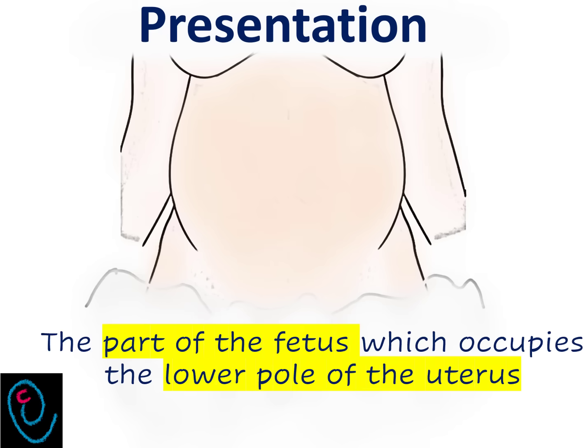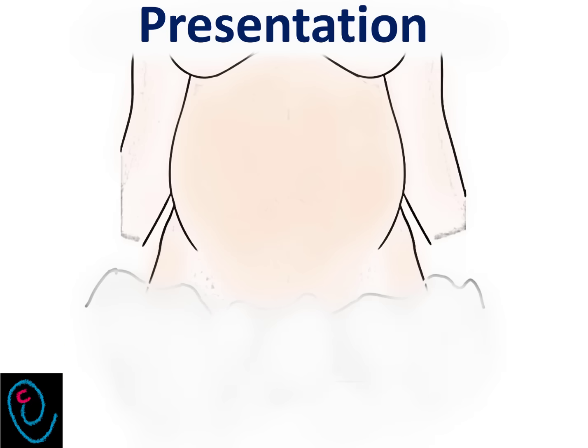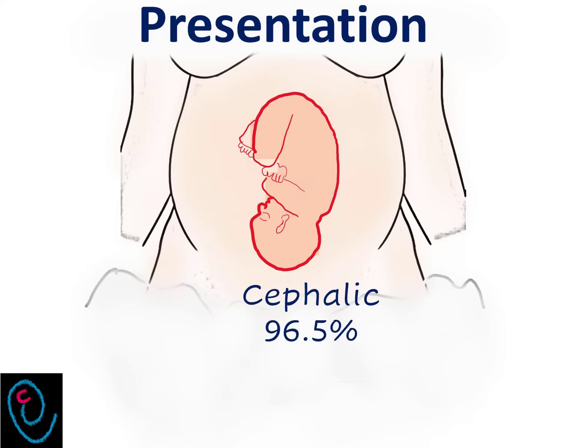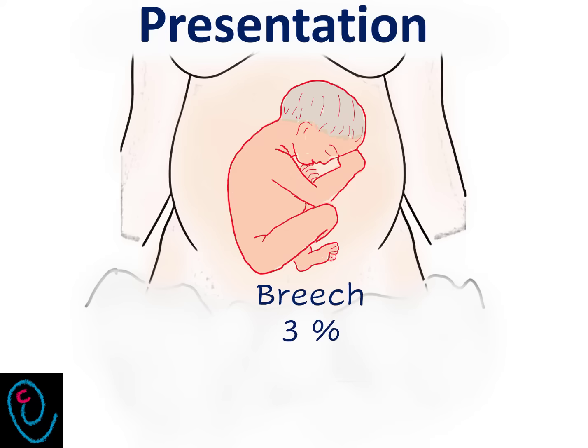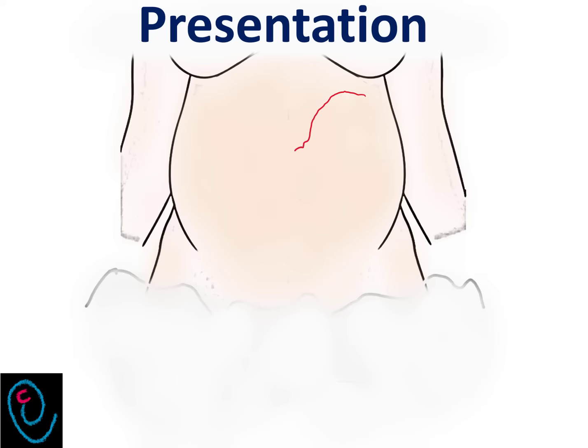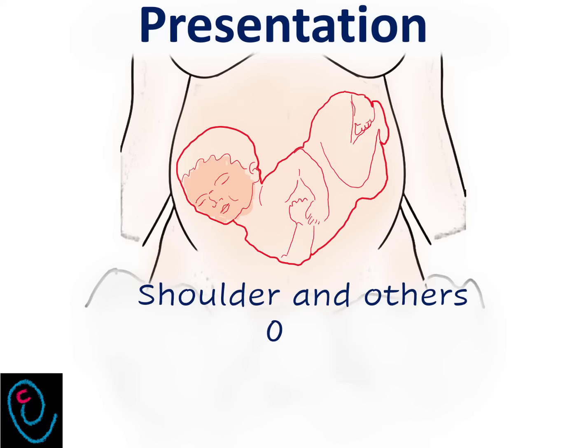Presentation is the part of the fetus which occupies the lower pole of the uterus. Most commonly, it is a cephalic presentation. In 3% of term pregnancies, the presentation is breech. In 0.5% of pregnancies, the presentation is shoulder and others.